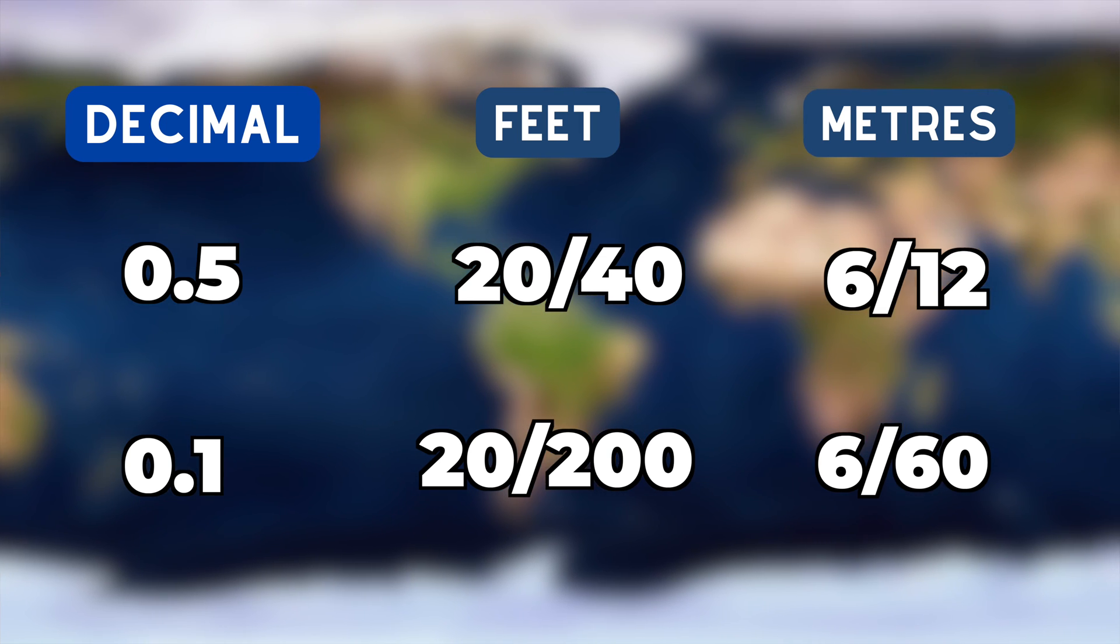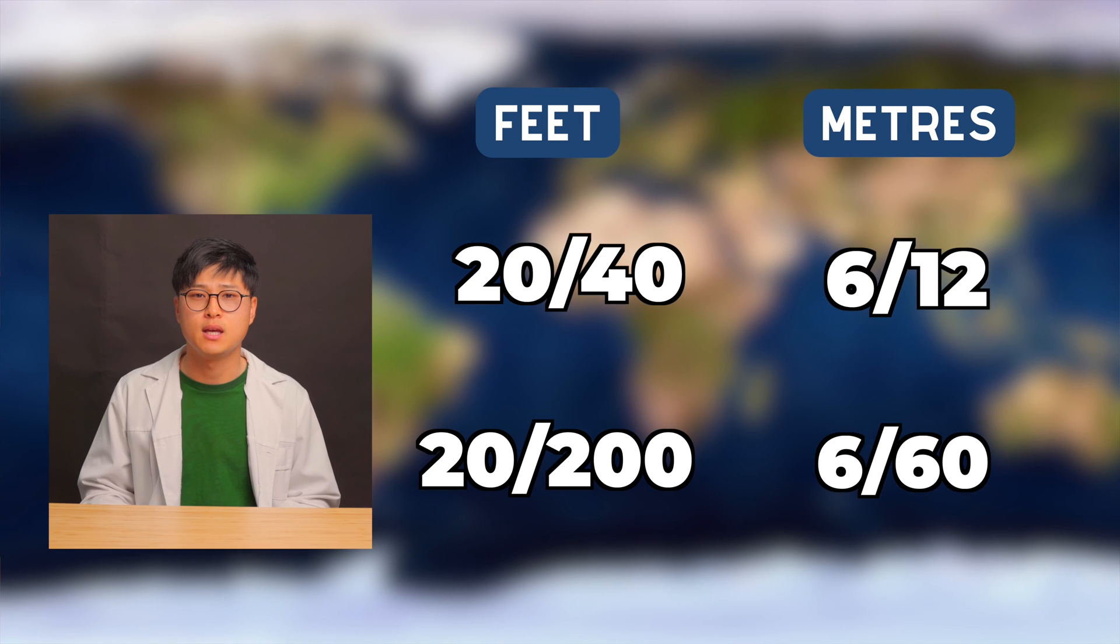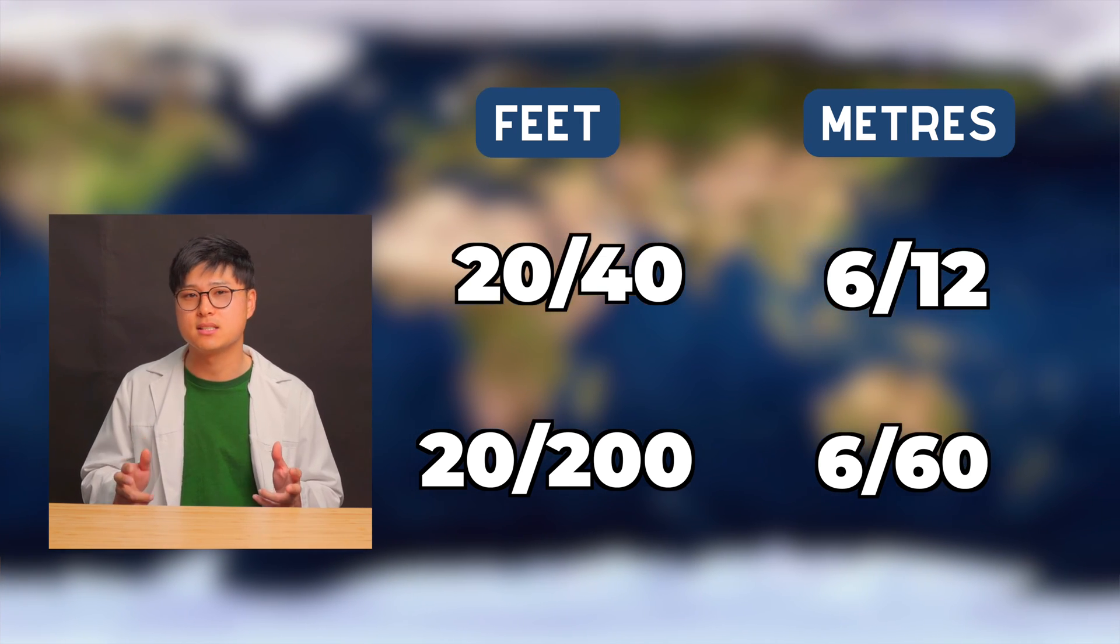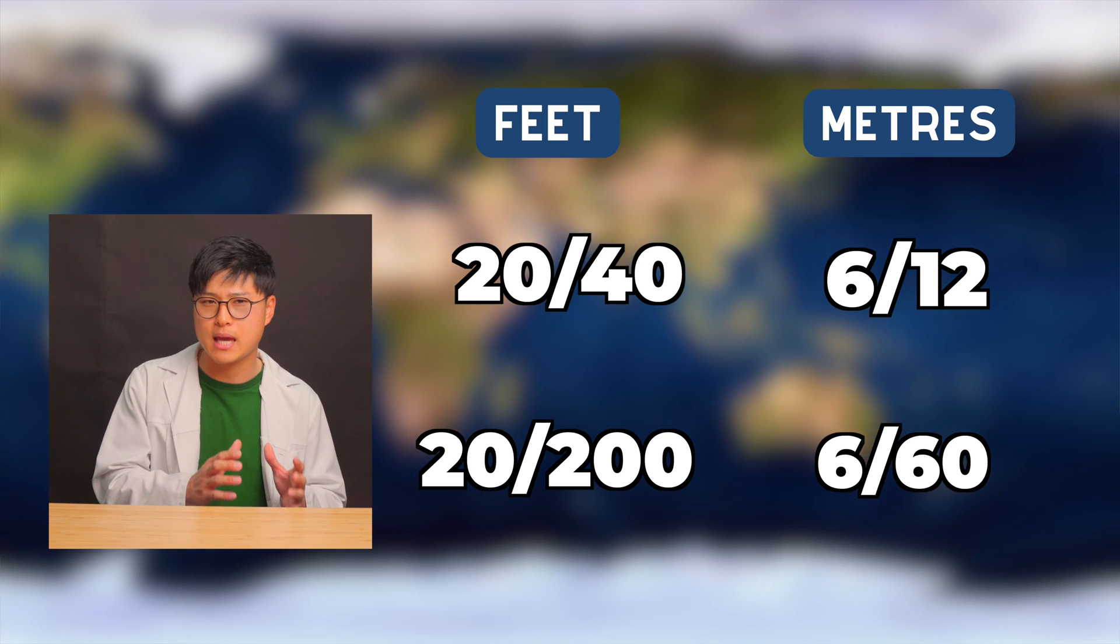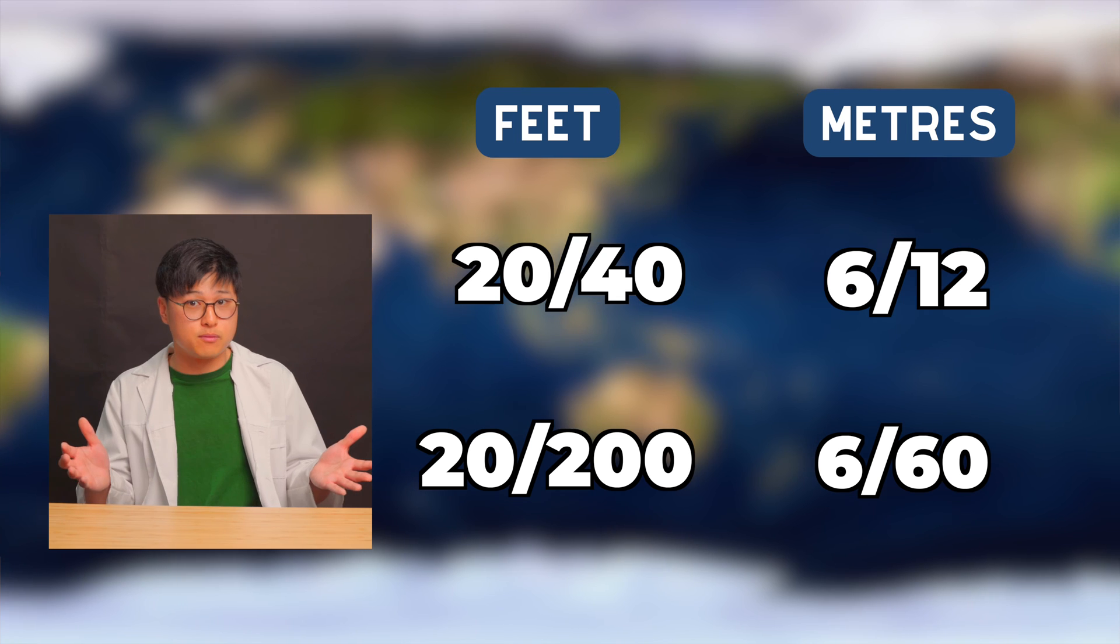In my opinion though, there are pros and cons for displaying visual acuities like this. In a Snellen fraction, you have information about the testing distance and the size of the letters you are able to read. And to an optometrist, this is valuable information.